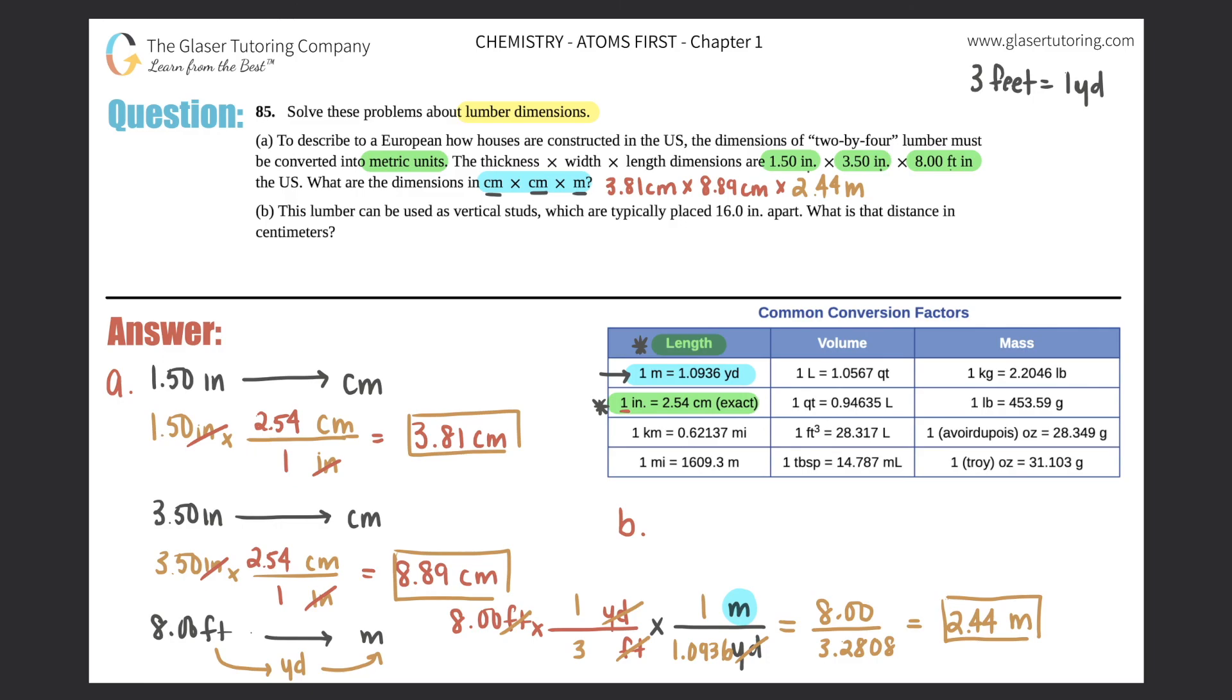Okay, that gets rid of a. Part b: this lumber can be used as vertical studs which are typically placed 16.0 inches apart. What is that distance in centimeters? So same thing again, it looks like we need to convert inches into centimeter, which is cm. We know a direct conversion for that, it's right here, we've used it two times already. So let's go for it.